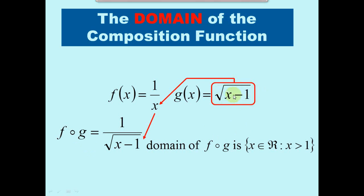So the domain of g allows one and bigger numbers. However, the output of g goes into the denominator of a different function, so this function is not allowed to be zero. What used to be allowed — having a one — is no longer allowed, because one makes the square root zero, which ends up in the denominator. So the domain of the composite function now says x can be bigger than one but can no longer be equal to one, because one over zero is unacceptable.